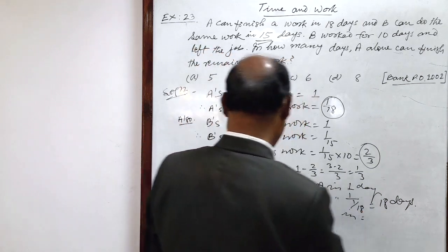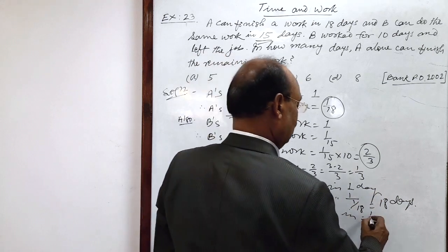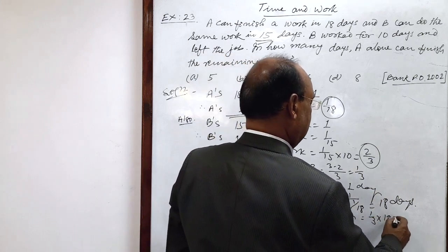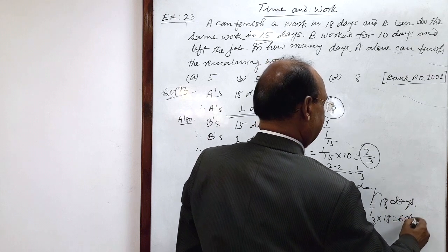Therefore, 1 by 3 job is done by A in how many days? 1 by 3 will be multiplied with 18: 1 by 3 into 18, this is equal to 6 days.